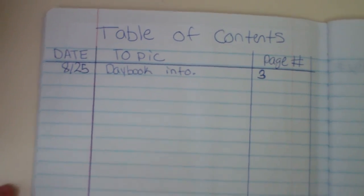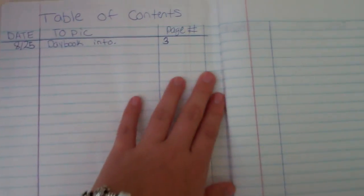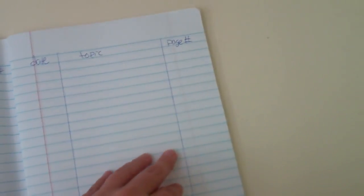So the table of contents, I used a ruler to make nice lines here. I want you to do that as well with date, topic, page number. Again over here, date, topic, page number.